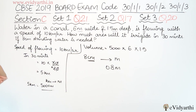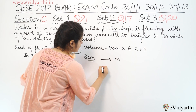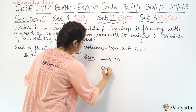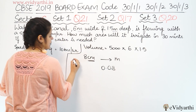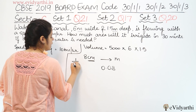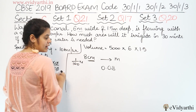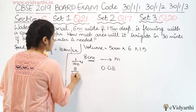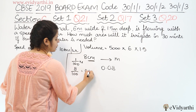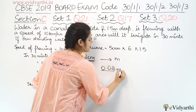Now, 8 cm needs to be converted to meters. Since 1 cm = 1/100 meter, 8 cm = 8/100 = 0.08 meters. So the standing water depth is 0.08 meters.